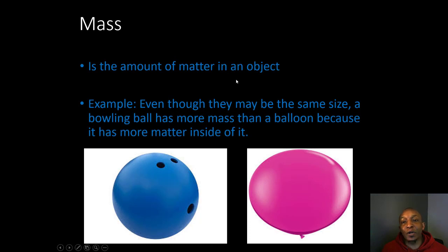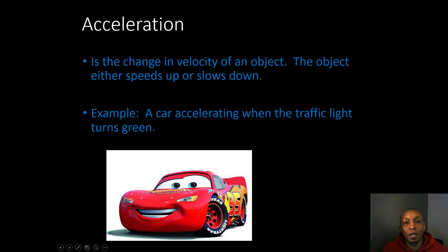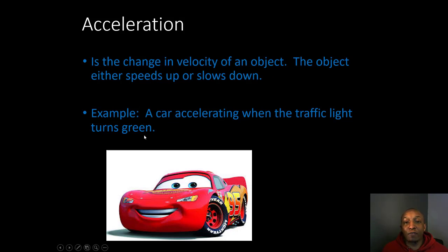Then we take a look at mass. Mass is the amount of matter in an object. For example, even though they may be the same size, a bowling ball has more mass than a balloon because it has more matter inside of it. Then acceleration — acceleration is the change in velocity of an object. The object either speeds up or slows down.